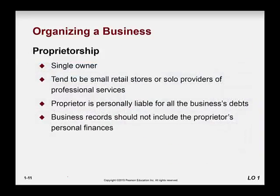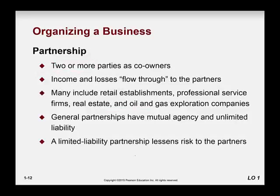The proprietorship, as I mentioned, is a single owner and they are really small — you are personally liable for all of the business's debts. The partnership — the key is two or more owners, and income flows through to the partners. So whatever money the partnership makes goes to the partners, and you would produce a K-1 form — which you'll learn about in tax — to produce your 1040, which is your individual tax return.